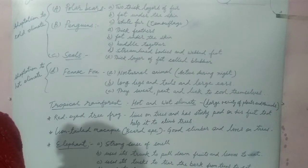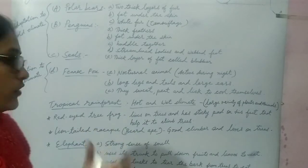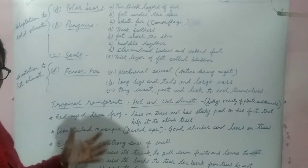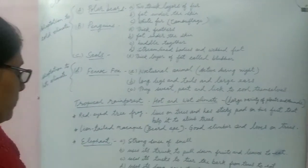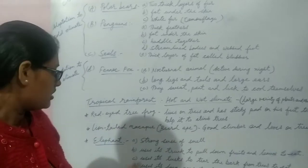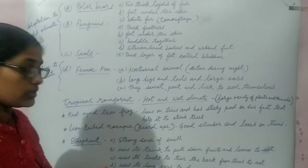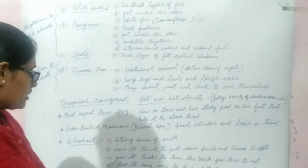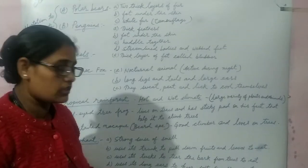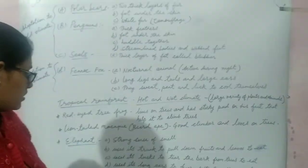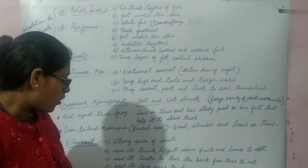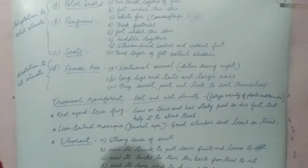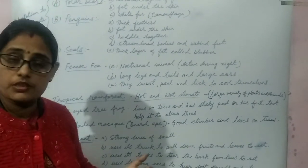Elephant is also an animal which is commonly found in tropical rainforest. Let's discuss some important adaptations. Number one is strong sense of smell. Number two, elephant uses its trunk to pull down fruits and leaves to eat. It uses its tusks to tear the bark from trees to eat. It uses its long ears to hear soft sounds and to cool itself in hot and humid climate.